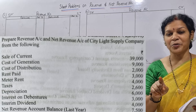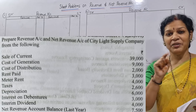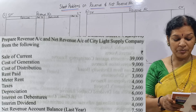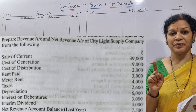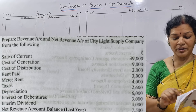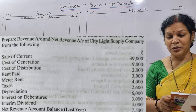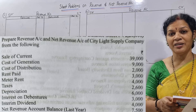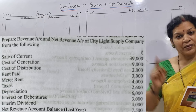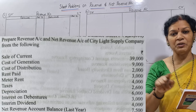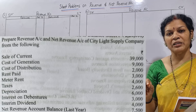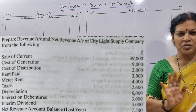Interest on debentures and interim dividend - these two come under the net revenue account debit side. Net revenue account - interest and dividend transactions come here. Next, net revenue account balance: opening balance is given as 7,500 - that is last year's closing balance. When we open the net revenue account, this amount we take on the credit side. So we'll be taking it on the credit side. Simple.